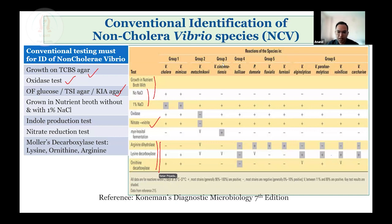This is a table from Koneman's 7th edition displaying these biochemical tests. Using these biochemical tests, we can identify different species of non-cholera Vibrios.